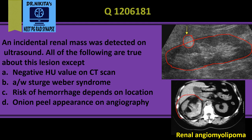On CT scan, this is the right kidney and that's the left kidney. In the right kidney we see this mass which has black areas. Black on CT is either air or fat — here it is a dirty black, so it is fat, consistent with the lipoma component of angiomyolipoma.